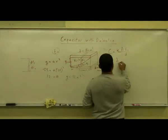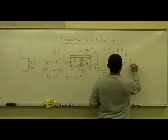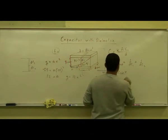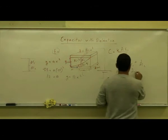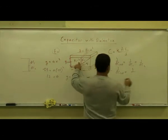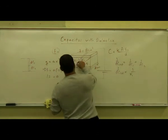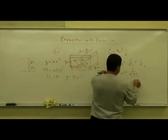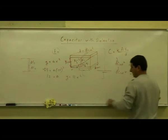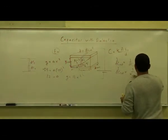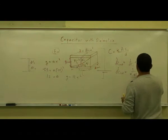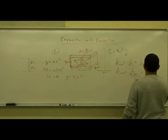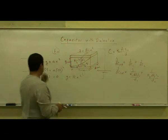DC₁ and DC₂ are in series with each other, so: 1/DC_total = 1/DC₁ + 1/DC₂, which gives 1/DC_total = D₁ over (κ₁·DA₁·ε₀) plus D₂ over (κ₂·DA₂·ε₀).